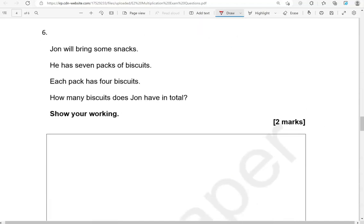John will bring some snacks. He has 7 packs of biscuits. So John is going on a trip with his friends. The context is missing here, but the idea is that he has 7 packs of biscuits. Each pack has 4 biscuits. How many biscuits does John have in total? Show your working. So we're working out 7 times 4 or 4 times 7.